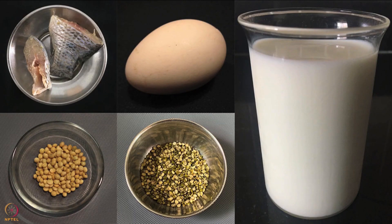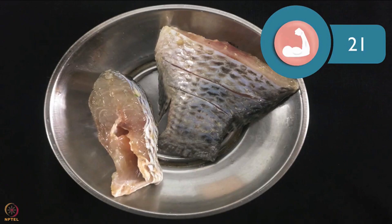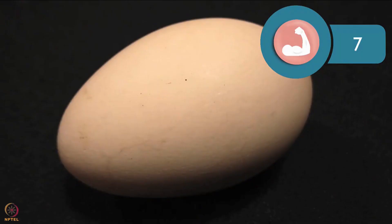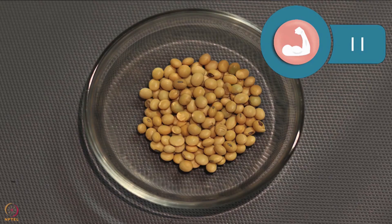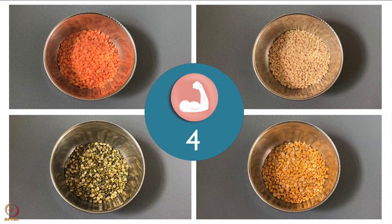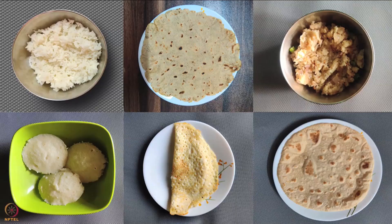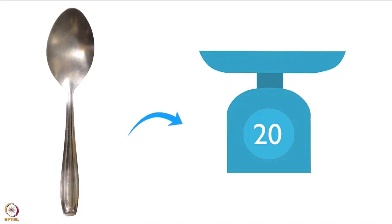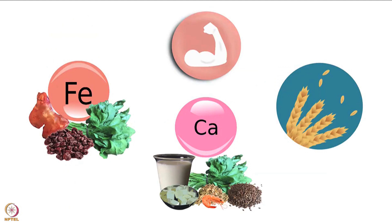Let's take a look at the protein content of some food sources. 100 grams of fish has about 21 grams of protein. 250 millilitres of cow's milk has approximately 8 grams of protein. 1 whole egg has around 7 grams. 30 grams of soya bean has 11 grams. Whereas 30 grams of raw pulses have around 4 grams of protein. Please note, one medium bowl in this tutorial is 150 millilitres and 1 tablespoon is 20 grams. The nutritive values mentioned are approximate values.